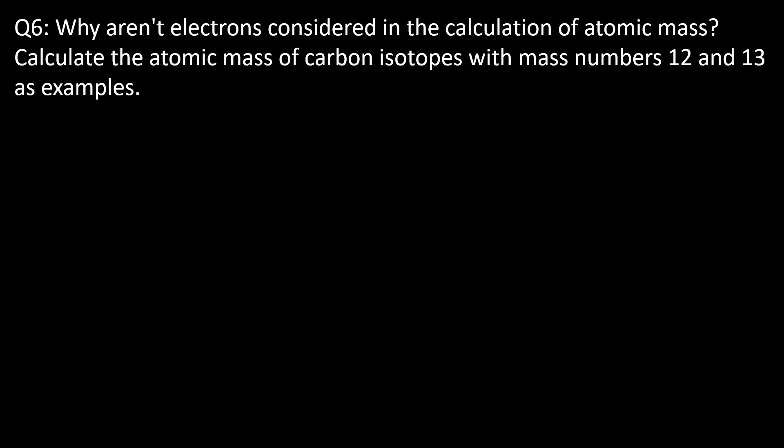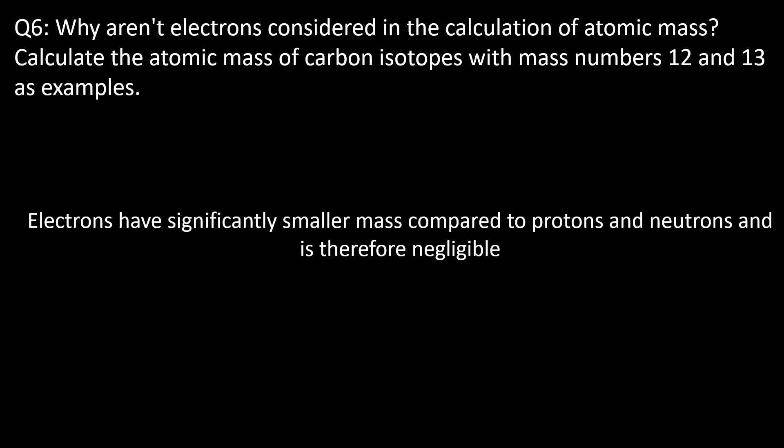Question six: why aren't electrons considered in the calculation of atomic mass? Calculate the atomic mass of carbon isotopes with mass numbers 12 and 13. Electrons aren't included in the atomic mass calculation because they are significantly smaller compared to the mass of protons and neutrons. Protons and neutrons contribute a substantially more significant mass, and therefore electrons can be neglected because they won't make a difference.